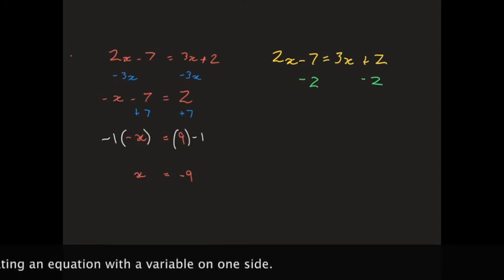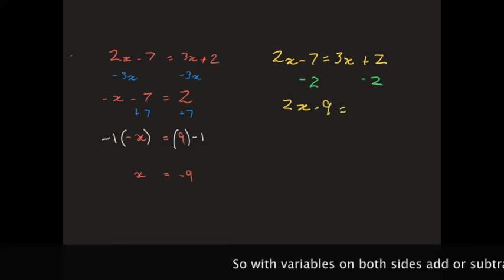On the left-hand side of the equation, minus 7 minus 2 will end up giving me minus 9. So, 2x minus 9 equals 3x.